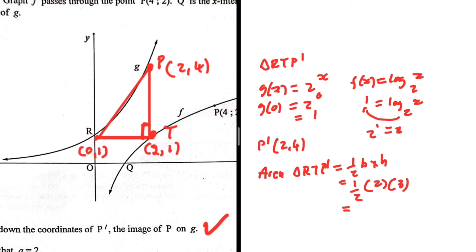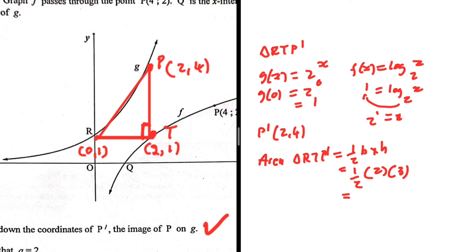So the area = ½ × 2 × 3 = 3 square units.